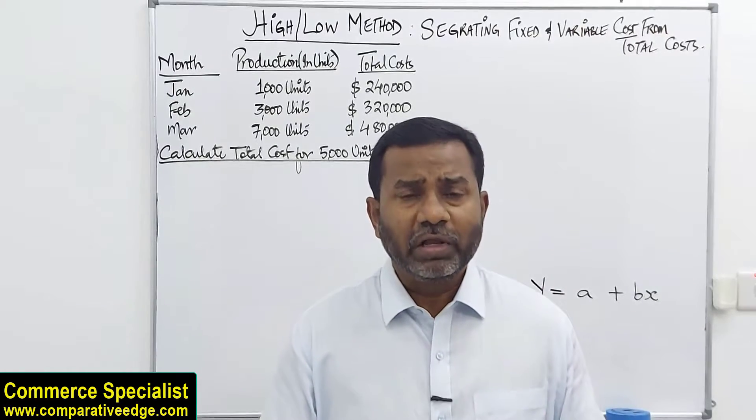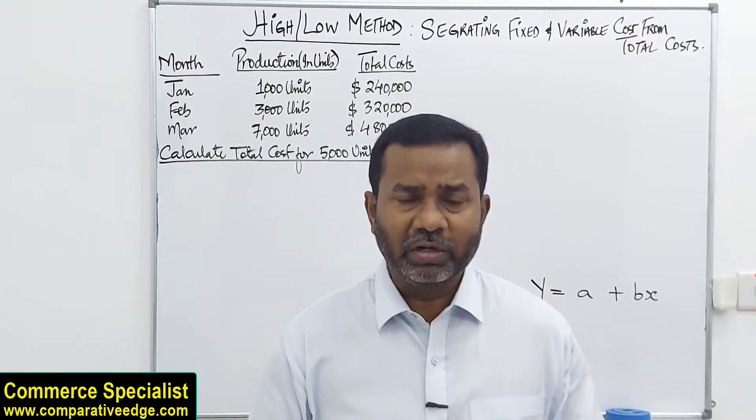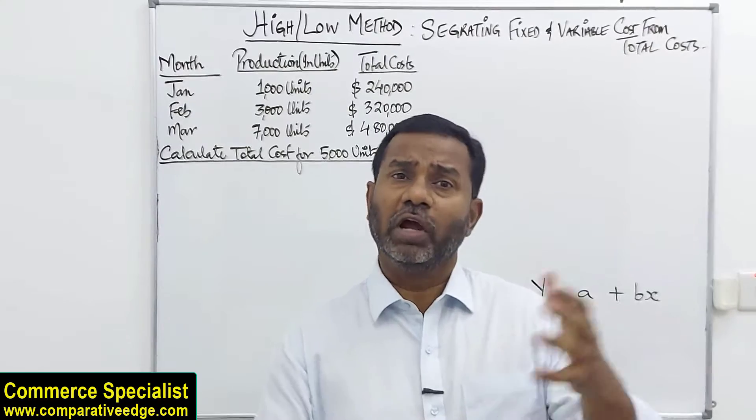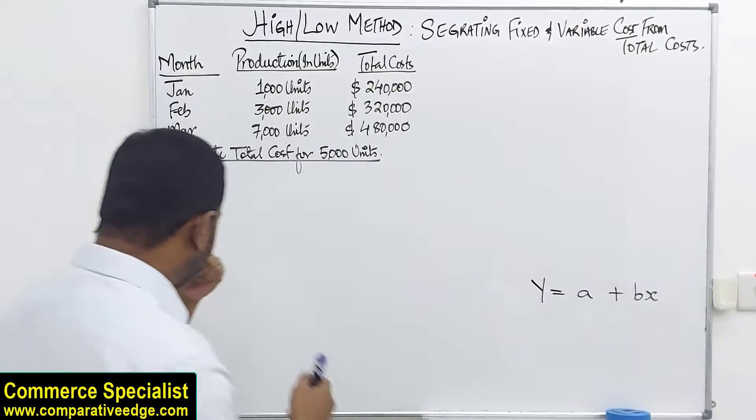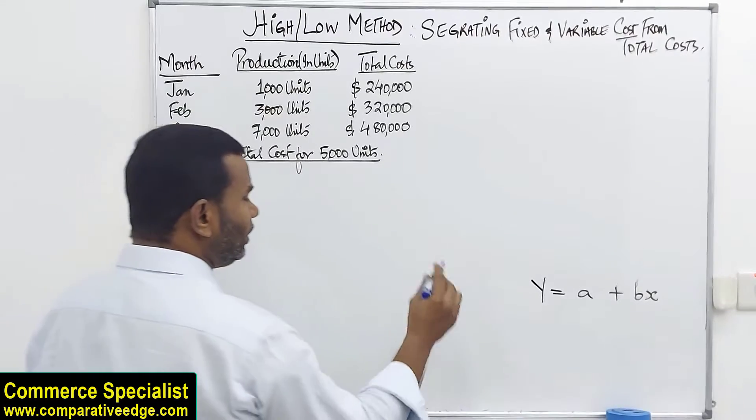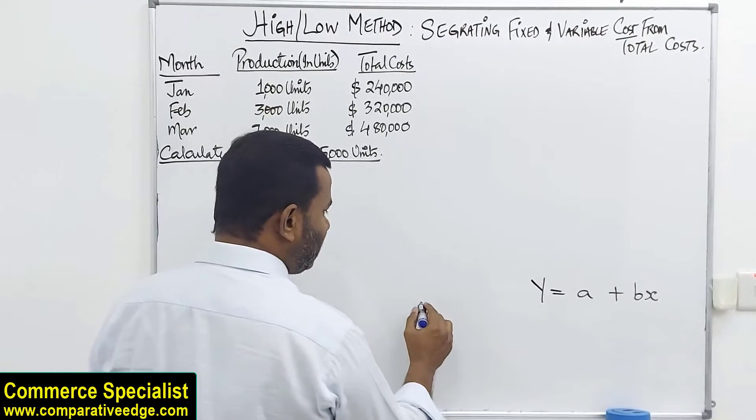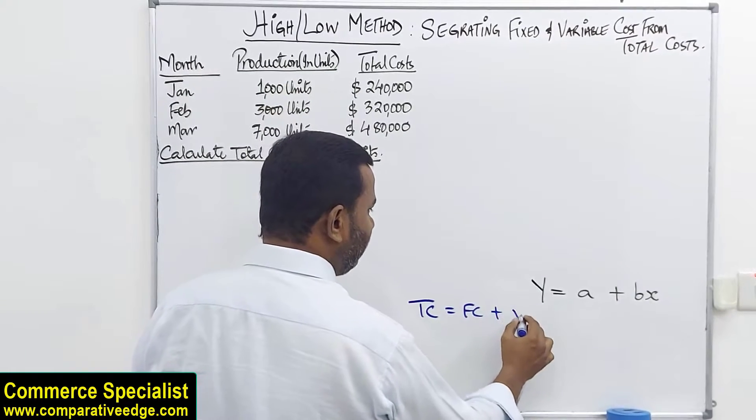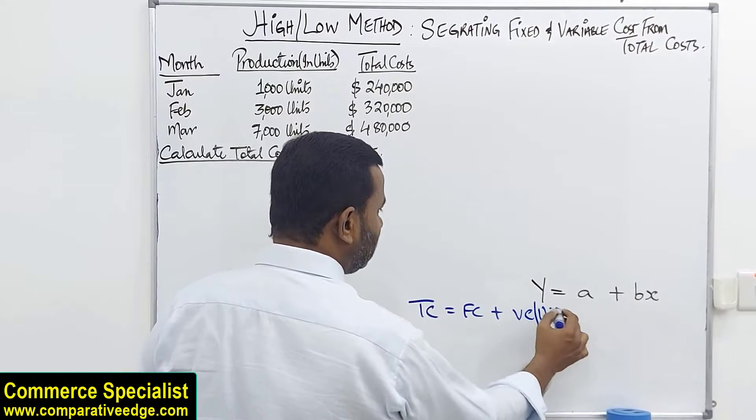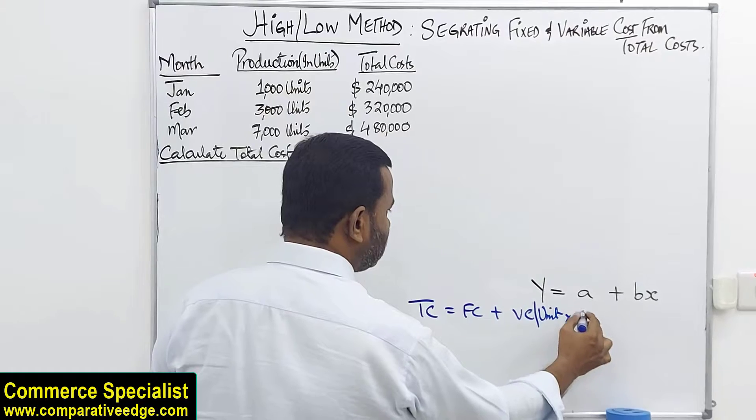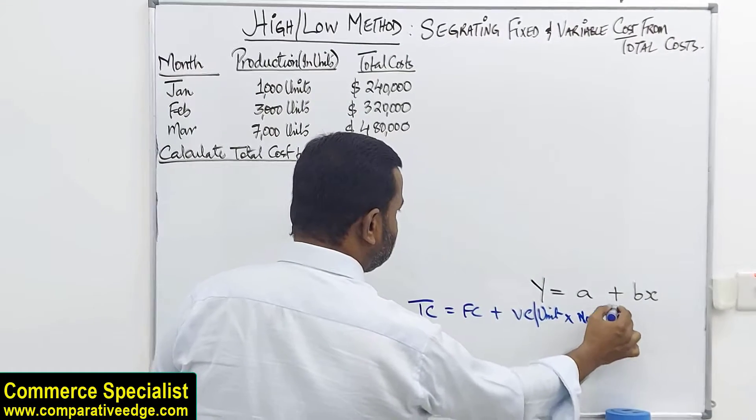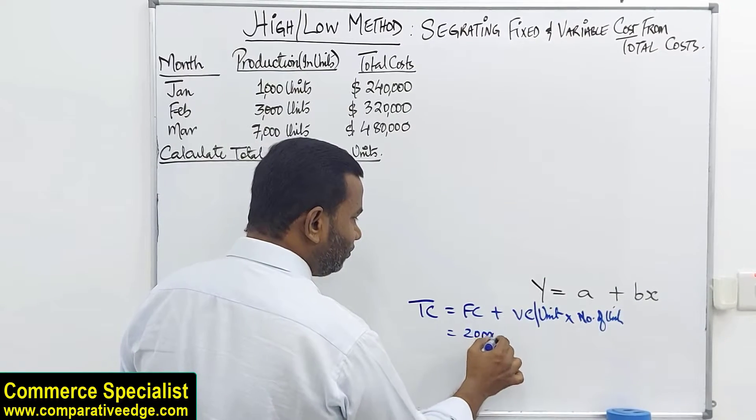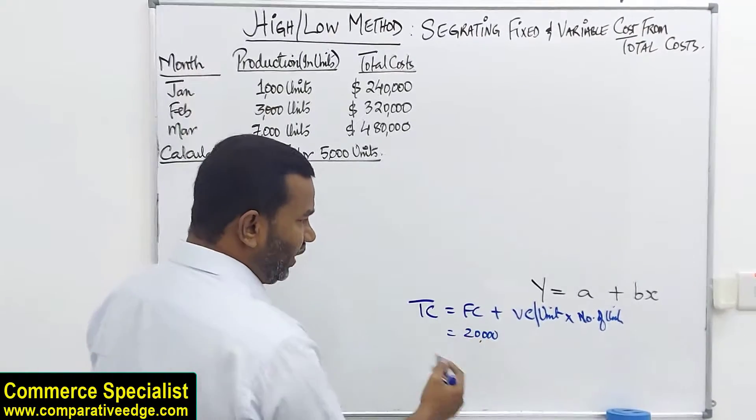Before we go to high-low method, understand how total cost is calculated. I'm giving you a simple equation to calculate total cost. The formula is: Total cost equals fixed cost plus variable cost per unit multiplied by the number of units. If I tell you fixed costs are $20,000, let's say it's a rent of a factory.